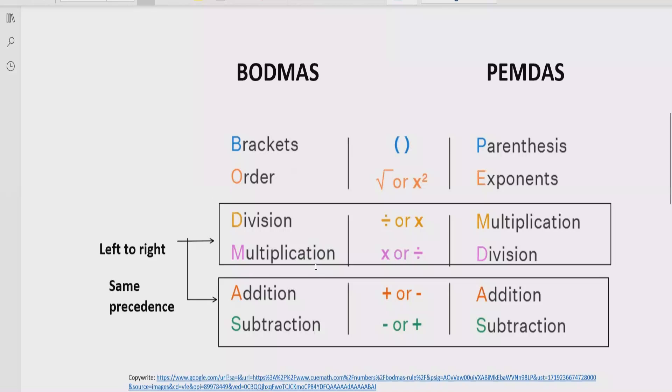Step number three, you have to solve division and multiplication. What will you do? You have to go left to right in your expression and find out which operation is coming. If division is coming first, you have to solve the division first. And if multiplication is coming first, you have to solve the multiplication first.